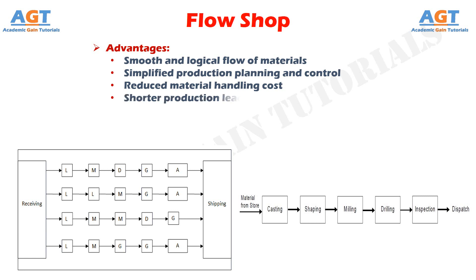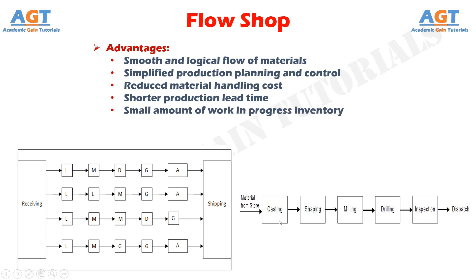Shorter production lead time: waiting time is minimal for each part during the manufacturing process in flow lines, and flow of materials is uninterrupted. This causes shorter production lead time and high production rates in flow line manufacturing. Small amount of work in progress inventory: the amount of work in progress inventory is small in flow line manufacturing because of shorter production lead time.